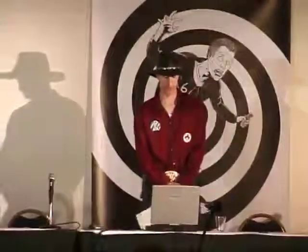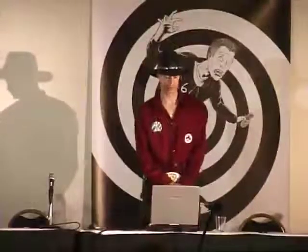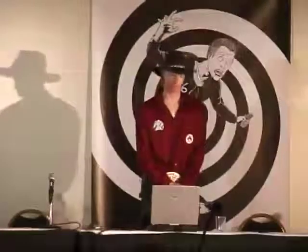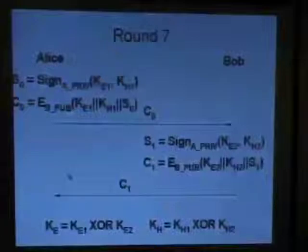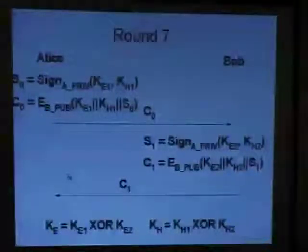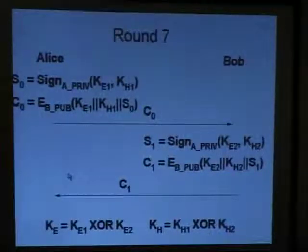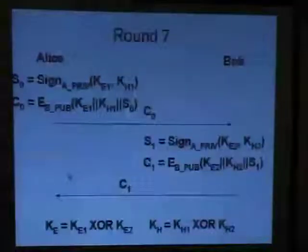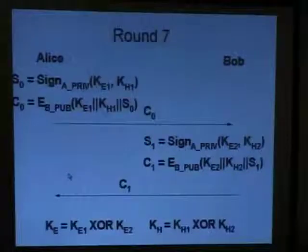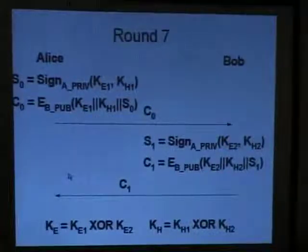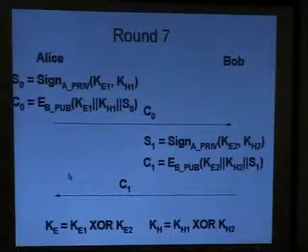So this is just the beginning part of the last protocol. We sign KE1, which is the first half of the encryption key. We sign KH1, which is the first half of the HMAC key. Encrypt all that. Encrypt the two halves and the signature. Transmit that ciphertext. Bob then does the same thing. That whole block, that block on the right is just the same thing that Alice did. This is symmetric now. And so he shoots over C1. Then they decrypt as before. And they both compute that same equation before for both keys. So they both then have KE and KH.